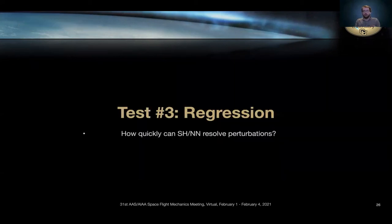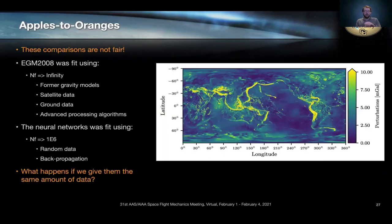The next test is in regression. So how quickly does a neural net capture these features versus a spherical harmonic model? What I mean by that is the comparisons we've done thus far are slightly unfair. Specifically the spherical harmonic model that I'm testing against, you can assume was fit with an infinite amount of data for the sake of discussion.